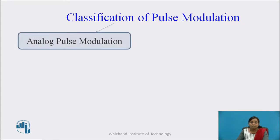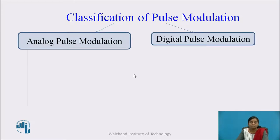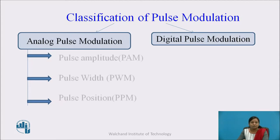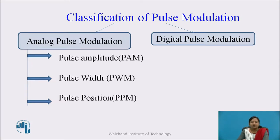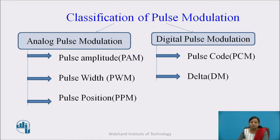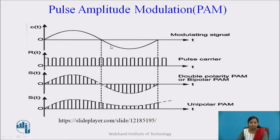Pulse Modulation is classified into two types: Analog Pulse Modulation and Digital Pulse Modulation. Analog Pulse Modulation is divided into three types, depending upon which parameter of the carrier signal changes. Its types are Pulse Amplitude Modulation, Pulse Width Modulation, and Pulse Position Modulation. Digital Pulse Modulation output is in the form of a code, that is in the form of a digital signal, 1 or 0. It is divided into two types: Pulse Code Modulation (PCM) and Delta Modulation.